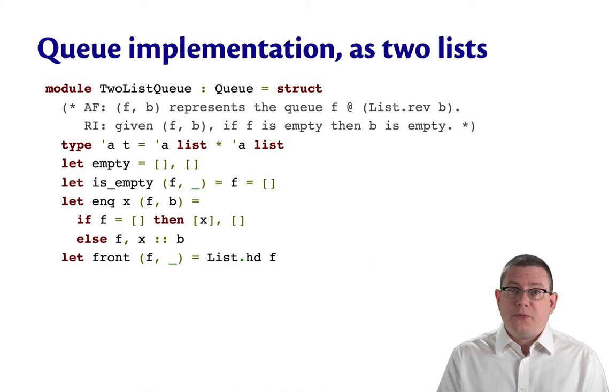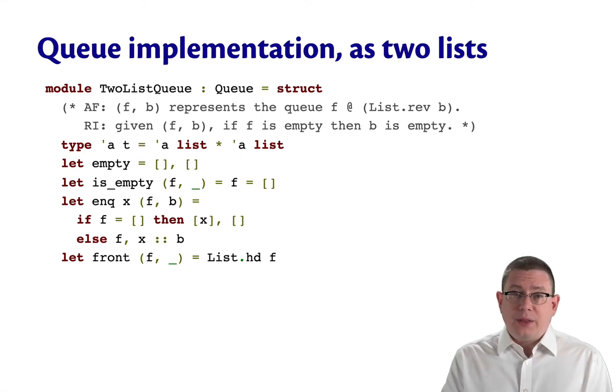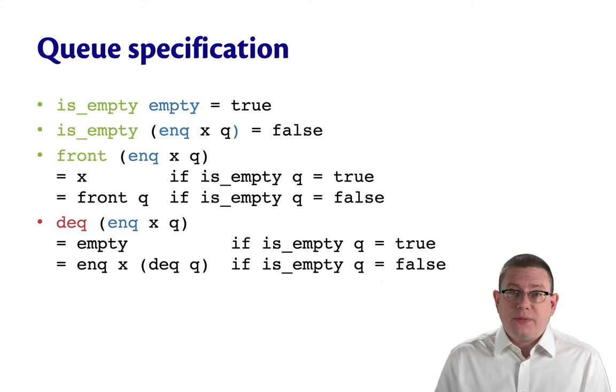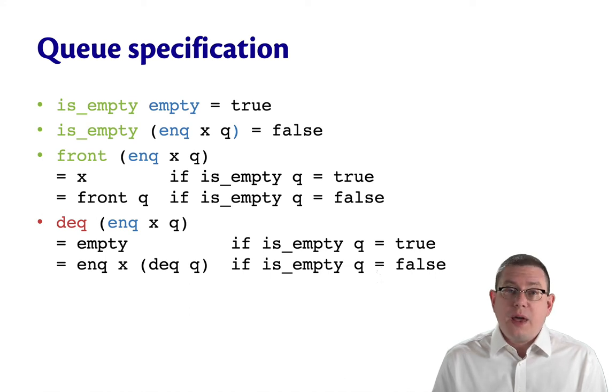To figure out what the front element of the whole queue is, we can just take the head of the front. And now, unlike before when we were talking about stacks, this is a piece of code that could legitimately raise an exception. On the other hand, if we go back and look at our equational specification, you'll notice that that specification says nothing about what front does when applied to an empty queue. So we've left that behavior unspecified, and therefore, we're not going to have to reason about it when we do proofs based on this specification.